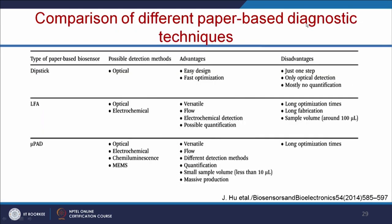Looking at the comparison of different paper-based diagnostic techniques, each has its own advantages and disadvantages. The dipstick method is easy and fast to optimize, but it only allows optical detection with no quantification. The lateral flow assay is versatile, based on lateral flow, and allows electrochemical detection, but has long optimization and fabrication times. The micropad is versatile with different detection methods, and the main advantage is that only 10 microliters of sample is needed. However, the drawback is that it also requires long optimization times.